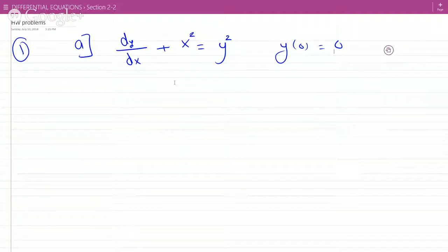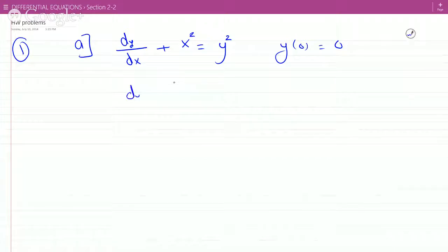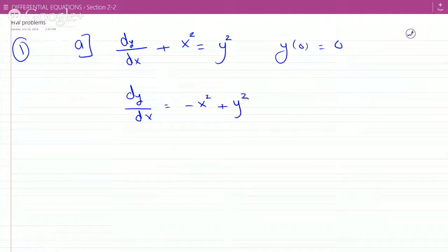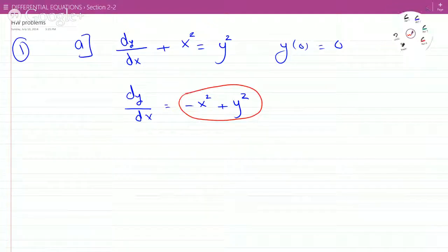So technically, we can rewrite this differential equation as dy over dx equals minus x squared plus y squared. Now, this guy here is your f. So f is minus x squared plus y squared.